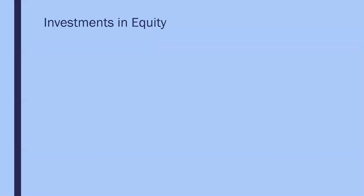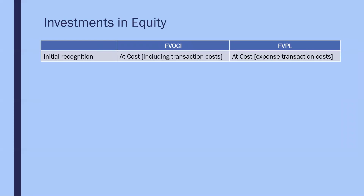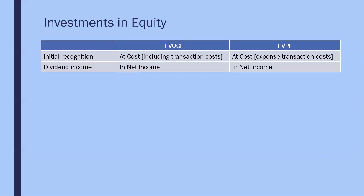Next, if we look at investment in equity, there are two possible models. The fair value through OCI election is irrevocable and is only available when the investment is a long-term investment. Otherwise, the default model is fair value through profit or loss. Initial recognition is at cost. When we purchase shares, there are usually transaction costs such as commissions and brokerage fees. Those transaction costs are added to the cost of the investment under fair value through OCI. However, under fair value through profit or loss, transaction costs are expensed — they are not added to the cost of the investment. On shares, you may receive dividends, and such dividends are included in net income under both the FVOCI and FVPL models.